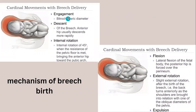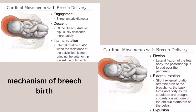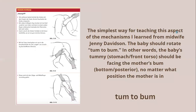The mechanism of breech delivery involves: engagement of the bi-trochanteric diameter; descent of the breech with the anterior hip descending more rapidly; internal rotation of 45 degrees with the pelvic floor, moving the anterior hip towards the pubic arch; flexion of the fetal body with the posterior hip forced over the perineum; then external rotation of the breech as the back turns anteriorly while the shoulders are brought in relation with one of the oblique diameters of the pelvis; finally, expulsion. You should know the sequence: engagement, descent, internal rotation, flexion, external rotation, expulsion.